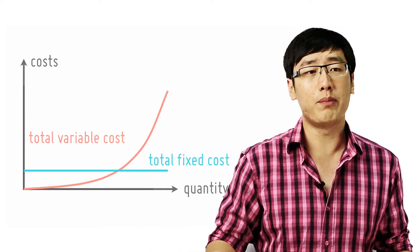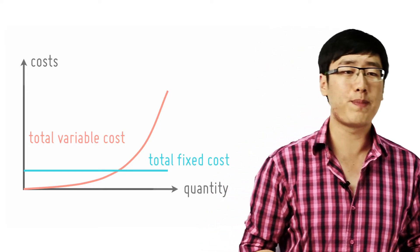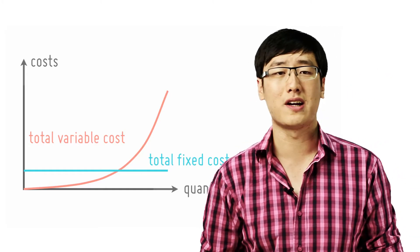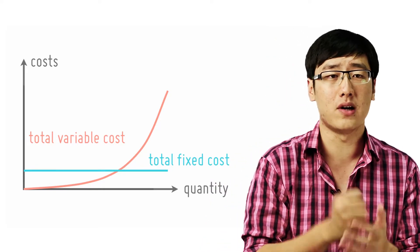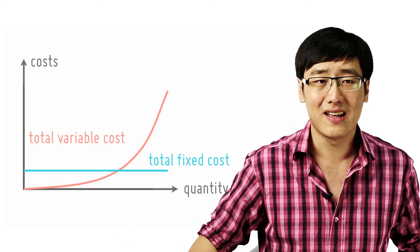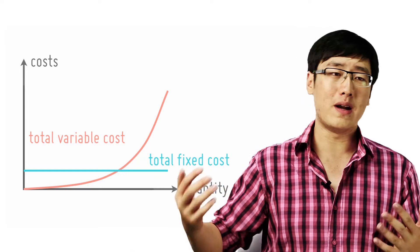However, when we expand the output, what happens is that the extra workers produce less and less extra output. Hence the extra units actually cost more because on average each worker produces less even though they pay the same salary. So hence TVC rises more and more rapidly.